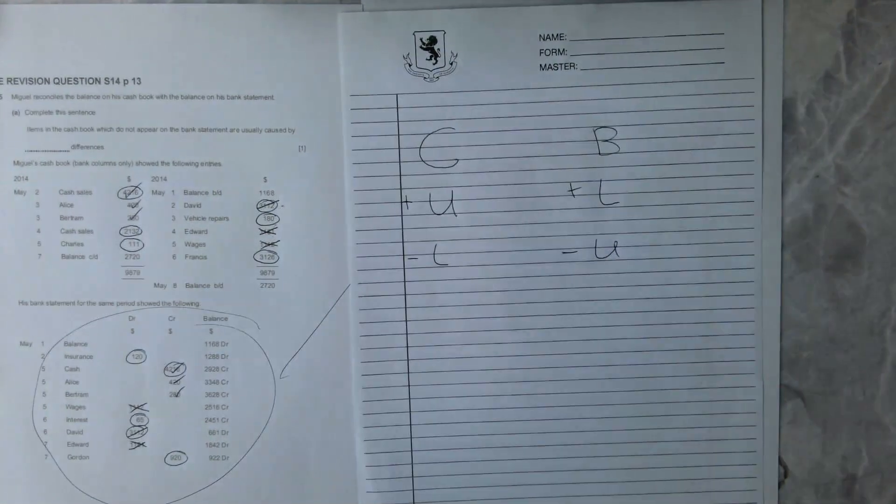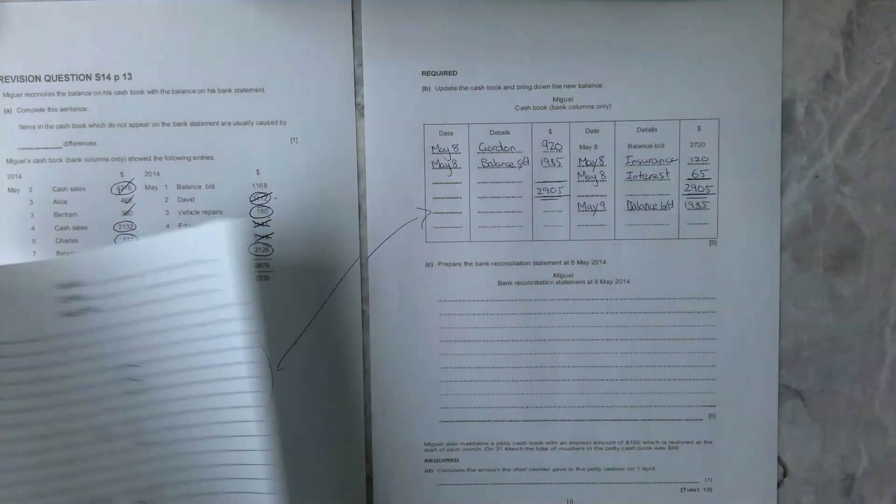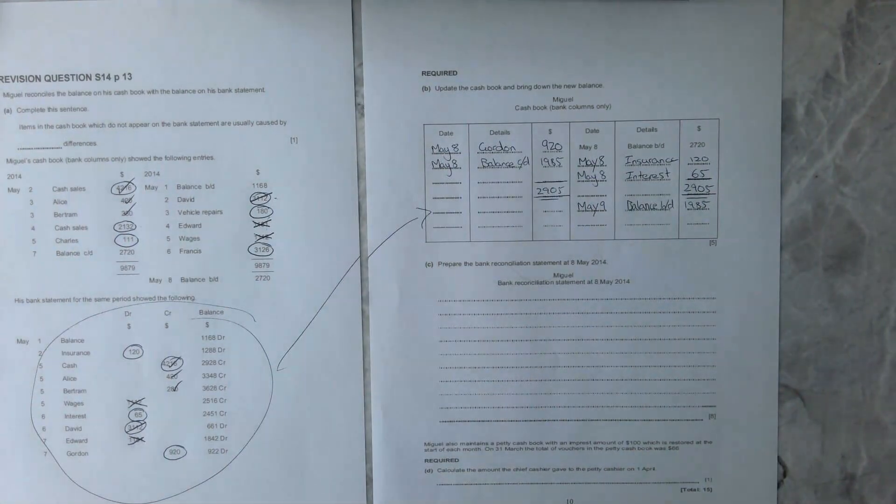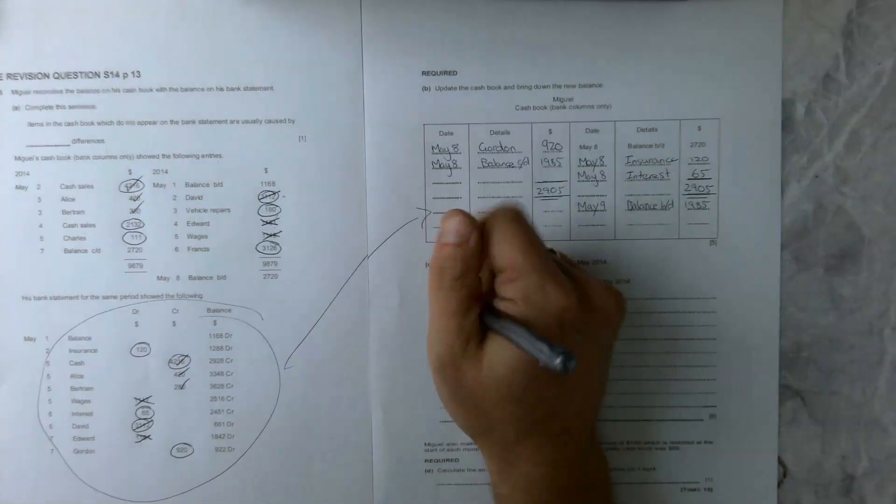But if you start with your balance as your bank statement, you are going to do BLUE. So you're going to plus your lodgements and minus your unpresented checks. Either way you will get the correct answer, it does not really matter what way you do it, just make sure you follow either CULL or BLUE.